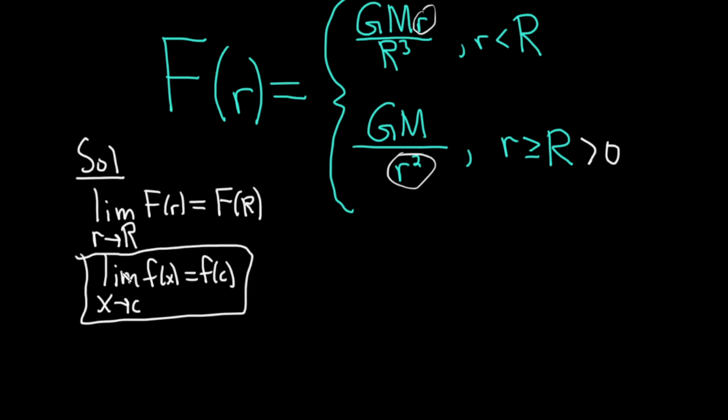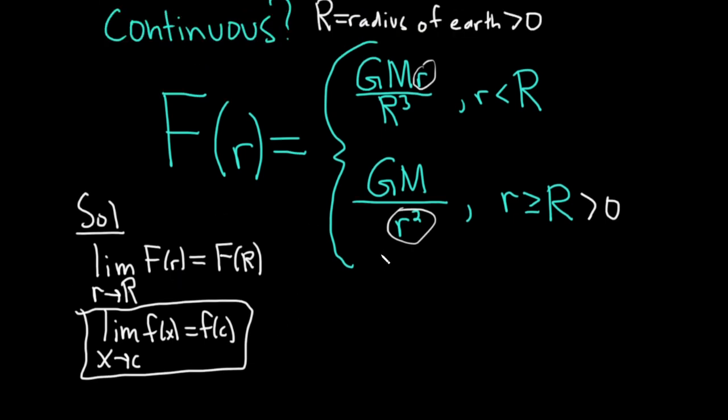And what books often do, which I think is really good, is they break it up into three pieces. It has to be defined, the limit has to exist, and the third condition is typically this one. However, this condition here encompasses the previous two. So this is oftentimes just the definition. So here it's the same thing. Our c is big R. So let's go ahead and work through it.